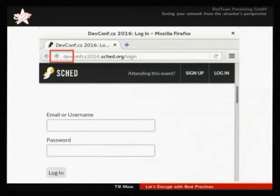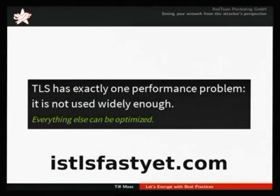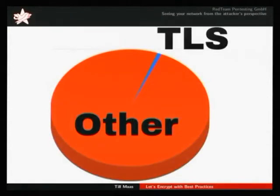When I ask people why they're not using TLS — for example, if they're running a service, or even sometimes our customers don't actually enforce HTTPS or use it properly — there are several reasons they tell me. One reason is that it's not fast enough. But as you can see on isttlsfastyat.com, TLS has exactly one performance problem: it's not used widely enough, and everything else can be optimized. And at Google, there's only about 1% of computational overhead for TLS. So this reason is not valid.